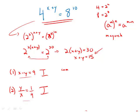Now if we combine the two statements, what we have is x minus y equals 9, y over x equals 1 fourth. We have two equations and two unknowns.